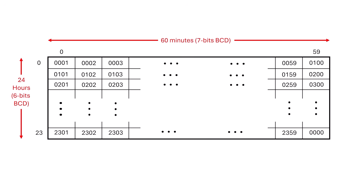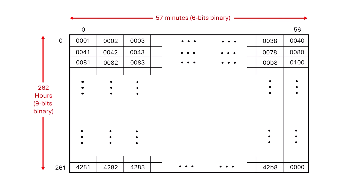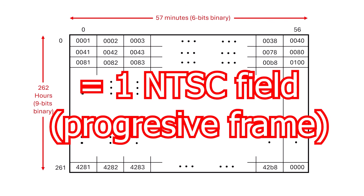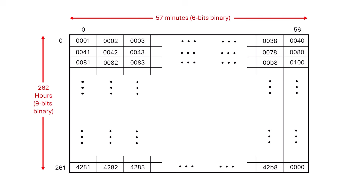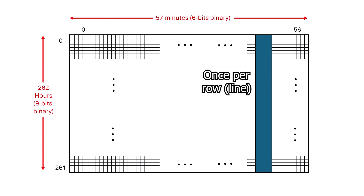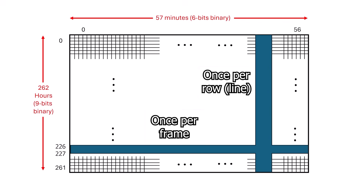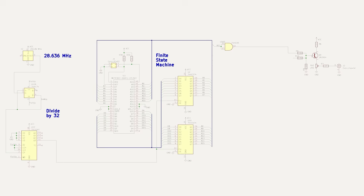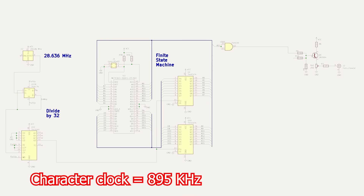Now, take that exact same finite state machine hardware and just swap the EEPROM contents. For video timing, instead of counting to 60 in 7-bit binary coded decimal, we count columns to 57 using 6 binary digits. So we get 57 groups of 8 pixels per line, and we extend our rows to 262 using 9-bit binary — a single NTSC field's worth of lines. That leaves us one extra output bit, which I'll use as a sync bit. I insert that sync bit once per row for five columns, and once per frame for two rows, giving me horizontal and vertical sync signals.